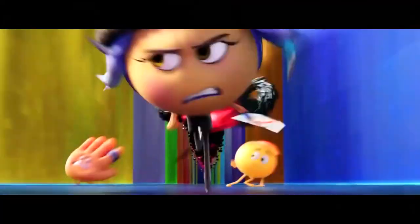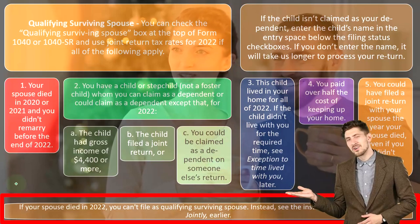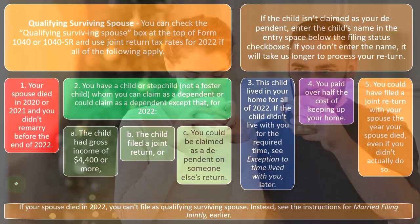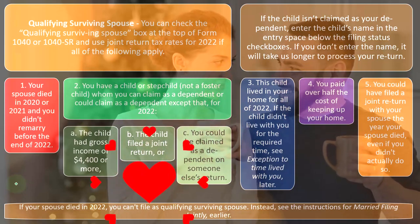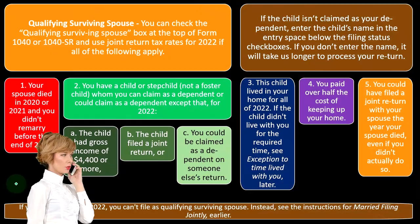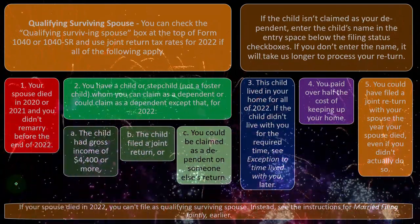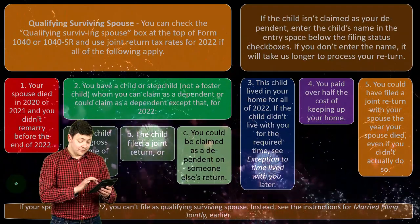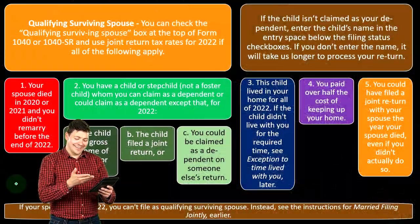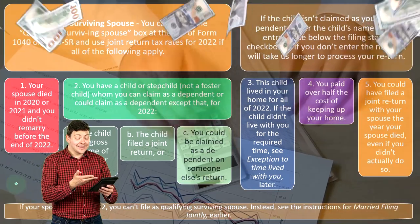If your spouse died in 2022, you can't file as a qualifying surviving spouse — instead, see the instructions for married filing jointly. If there was a death in 2022 before the end of the year, you have to account for that at the point of death. It makes sense: the spouse who died still has income that year, so you would still file married filing jointly to claim income in the year of death. The qualifying surviving spouse status applies only after the year of death.